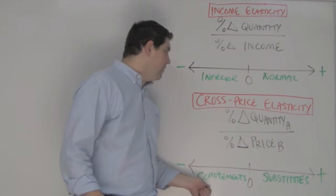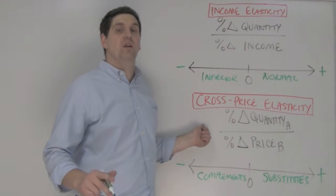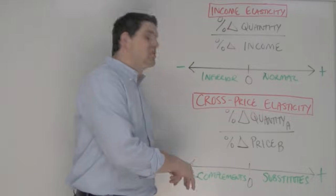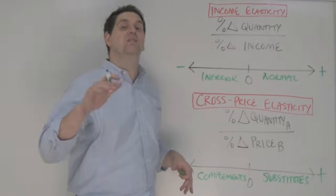Now, on this question, since there's a negative cross price elasticity coefficient, these two products are complements. And so, an increase in the price of one will decrease the demand for the other.